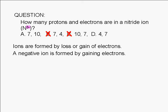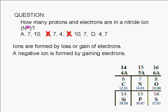So how do we determine the number of protons and electrons in the ion? We refer to the periodic table. Here's nitrogen. From the periodic table, we find that the atomic number of nitrogen is 7. The number of protons in a nitrogen atom is, therefore, 7.